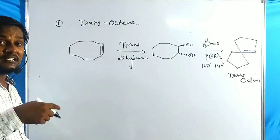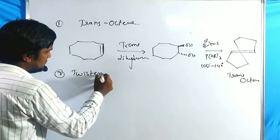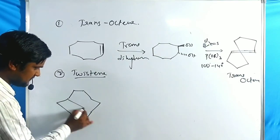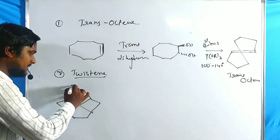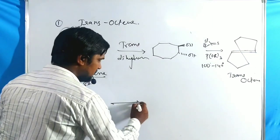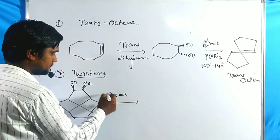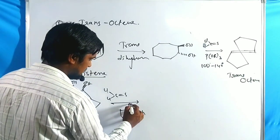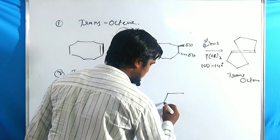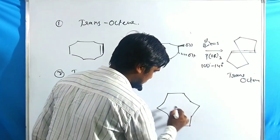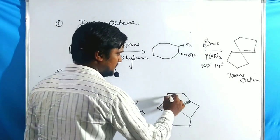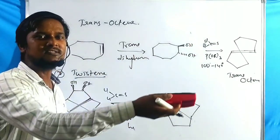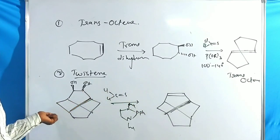Not only simple alkenes but Corey-Winter fragmentation can also prepare twistene. The twistene diol (OH, OH) is treated with thiophosgene followed by PR3 to give twistene as the major product. Twistene is a very sterically hindered molecule, yet this method can prepare olefins even from such strained molecules. Note: other methods cannot prepare these types of olefins from strained molecules.